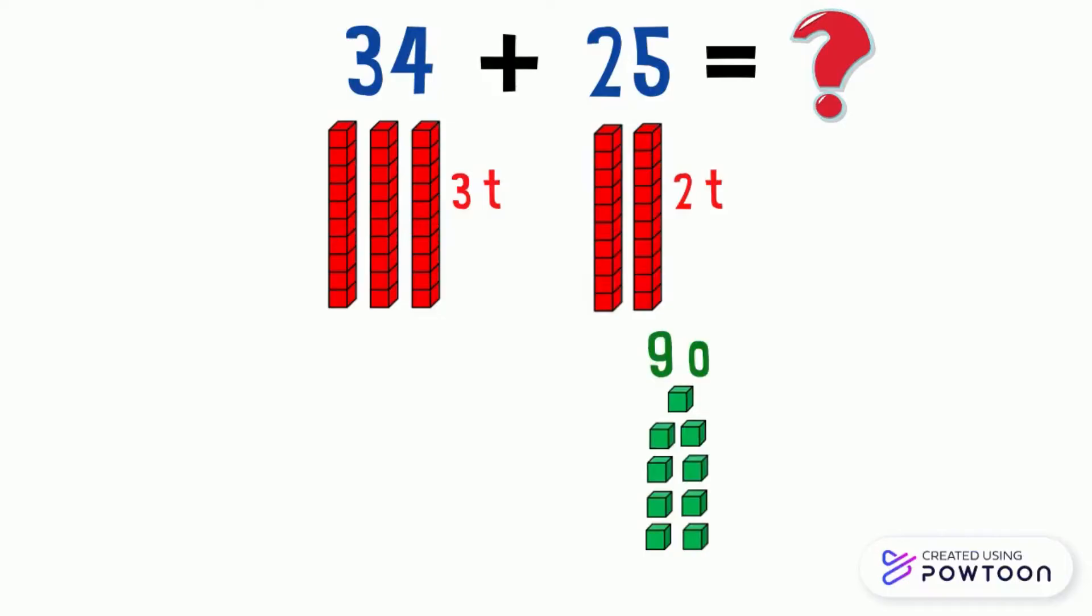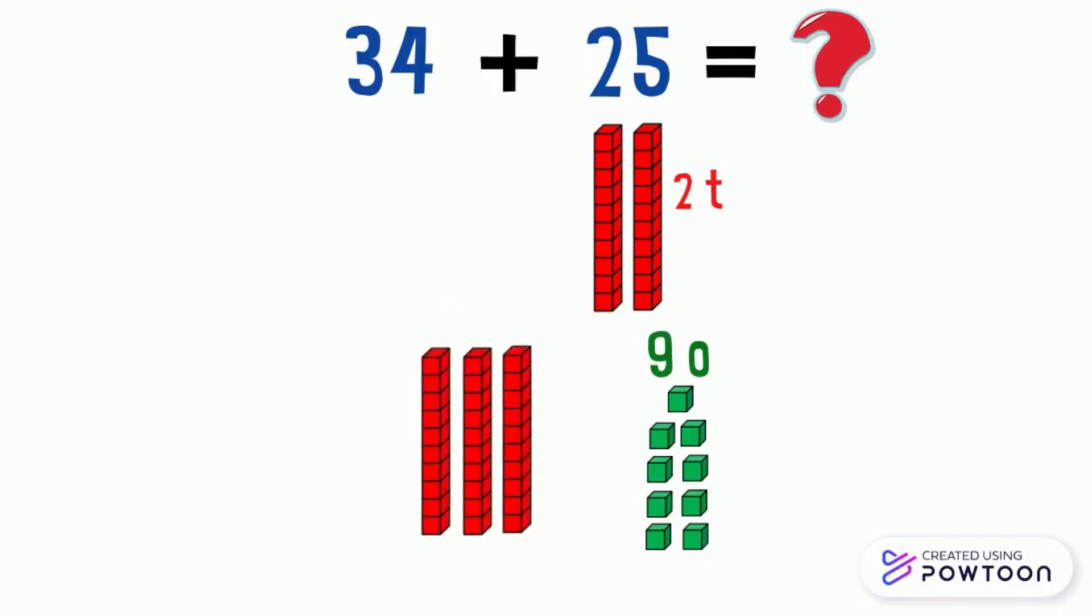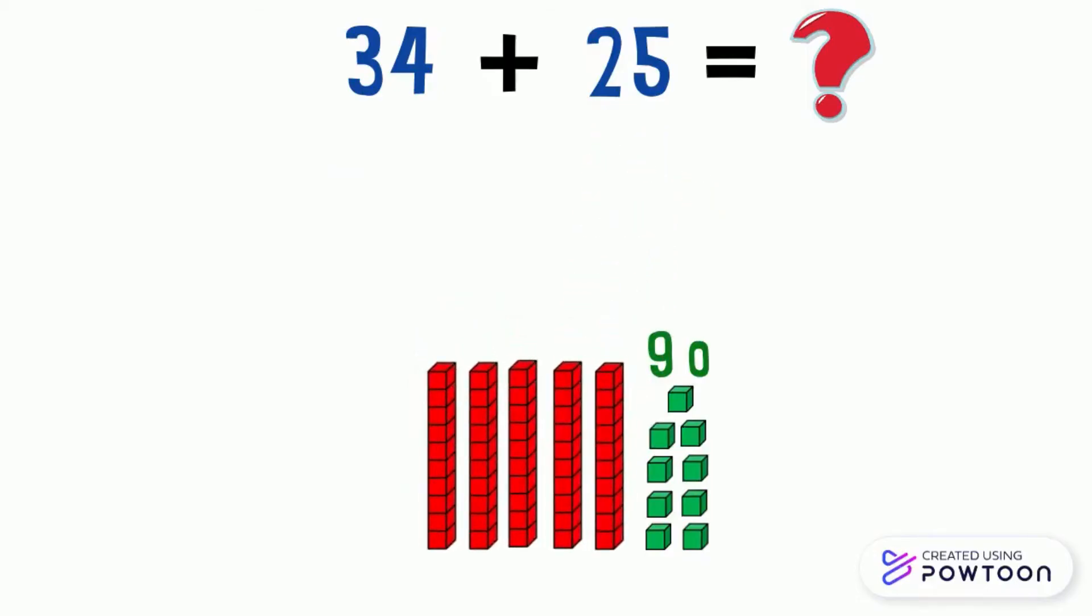Now, let's add the tens. Here, we have 3 tens and 2 tens. If we add them, we will get 5 tens. So, we have 5 tens and 9 ones, which represent the number 59.